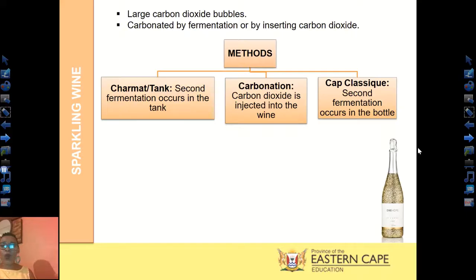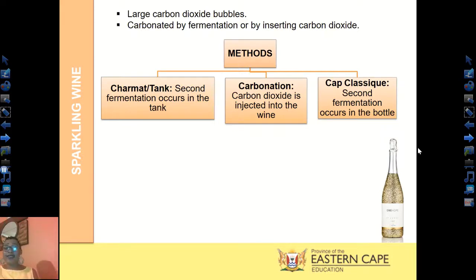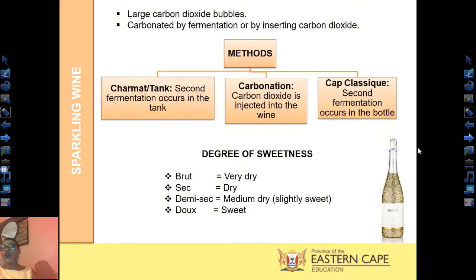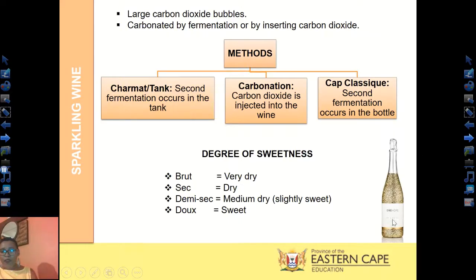The Méthode Cap Classique is when second fermentation occurs inside the bottle — the wine is first fermented normally, then bottled, and second fermentation happens inside the bottle. Sparkling wines have different degrees of sweetness found on the front label: Brut means very dry, Sec means dry, Demi-sec means medium dry or slightly sweet, and Doux means sweet.